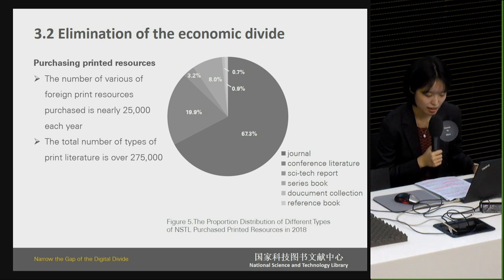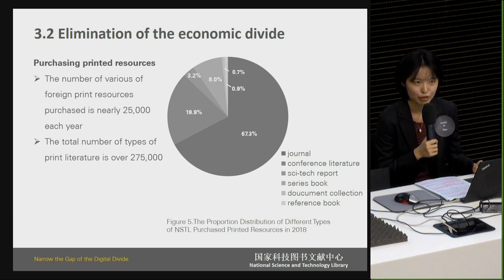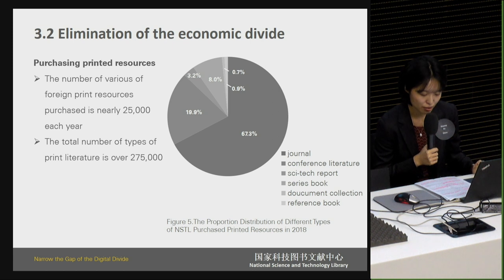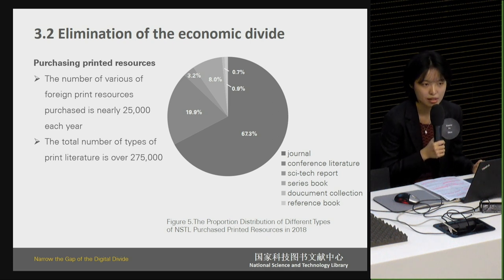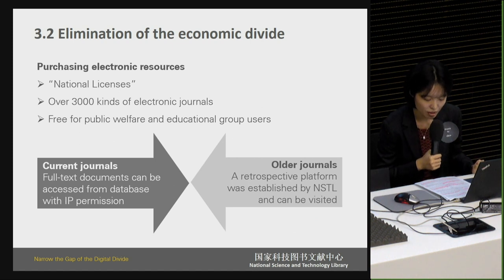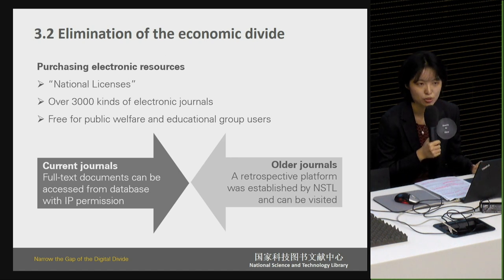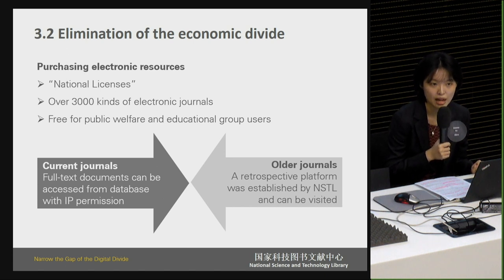In addition, NSTL has purchased electronic resources since 2002 in the form of national licenses to make up for domestic historical deficiencies. So far, NSTL has over 3,000 kinds of electronic journals, either current or past issues, all of which can be accessed freely by public welfare and educational group users. For current journals, full-text documents can be accessed from databases via IP or choice permission. Some articles are downloaded over 10,000 times annually.